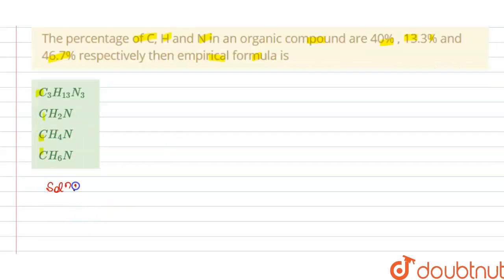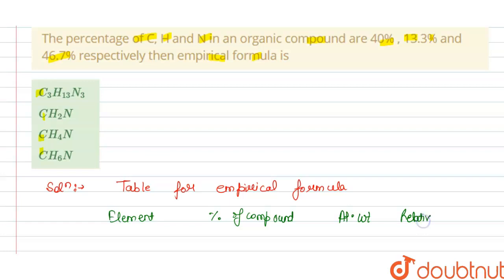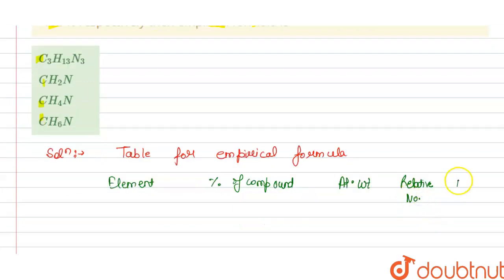So the solution of this question is we have the table for the empirical formula so that we can give the empirical formula easily. In the table we have the elements, percentage of the compound, then atomic weight, then relative number, then ratio of elements.